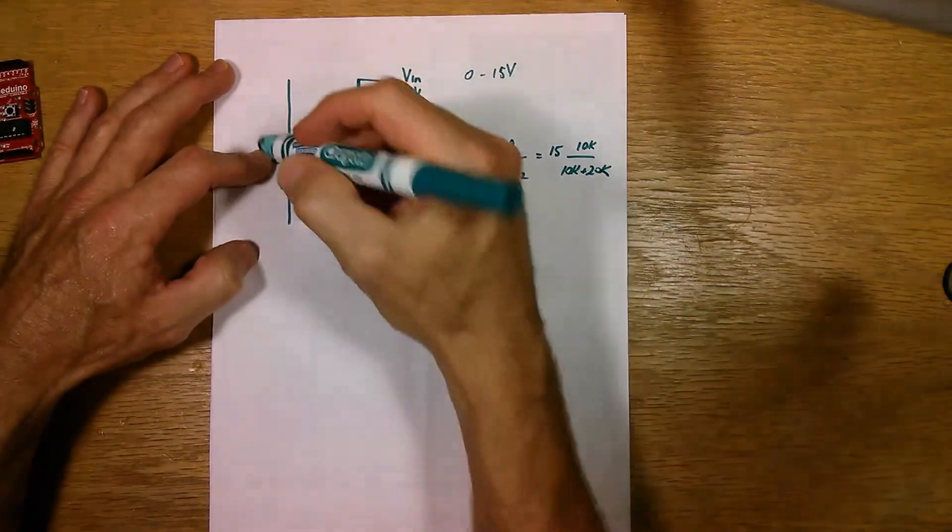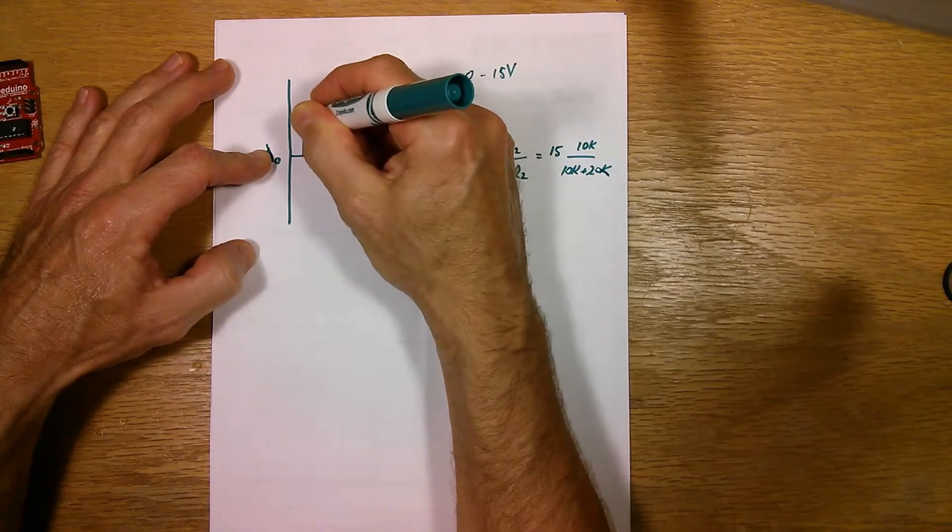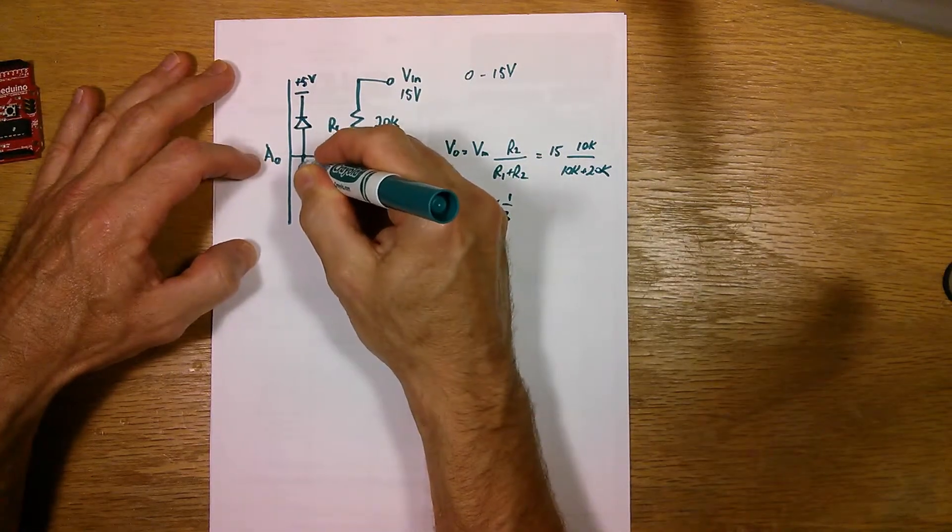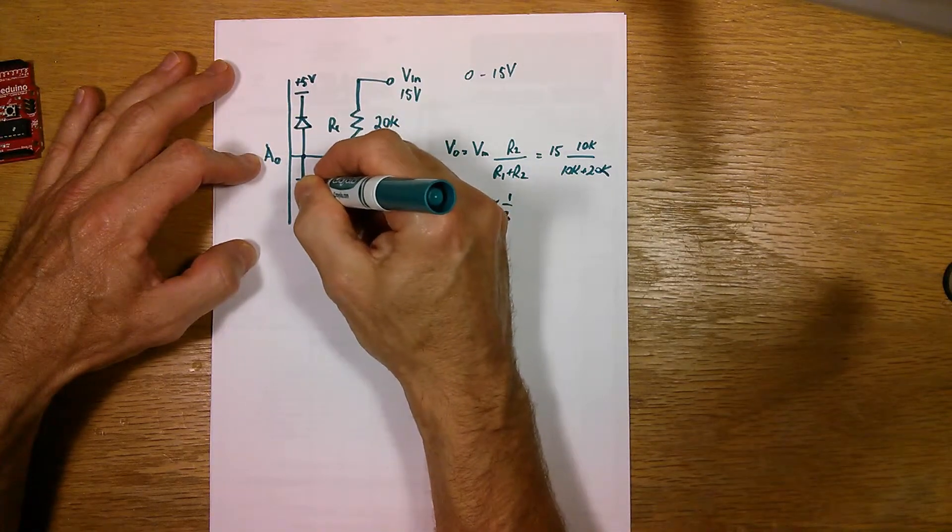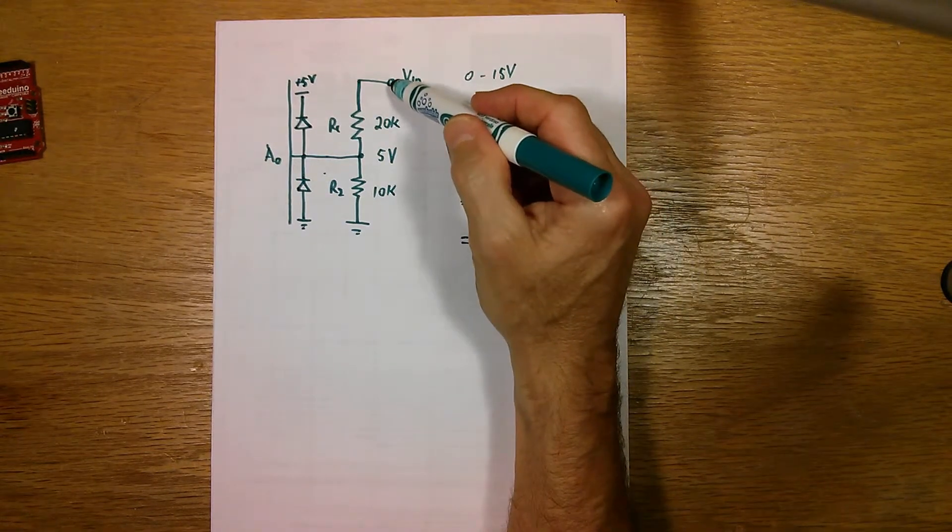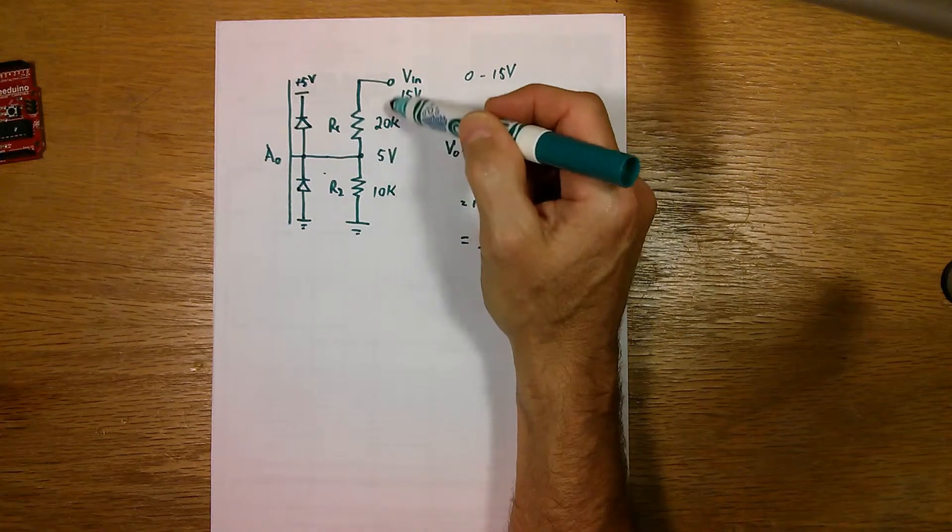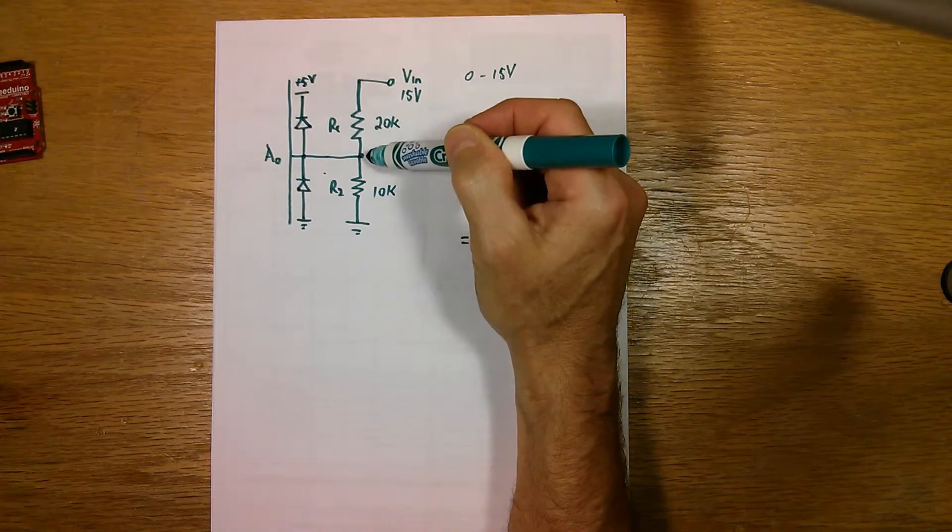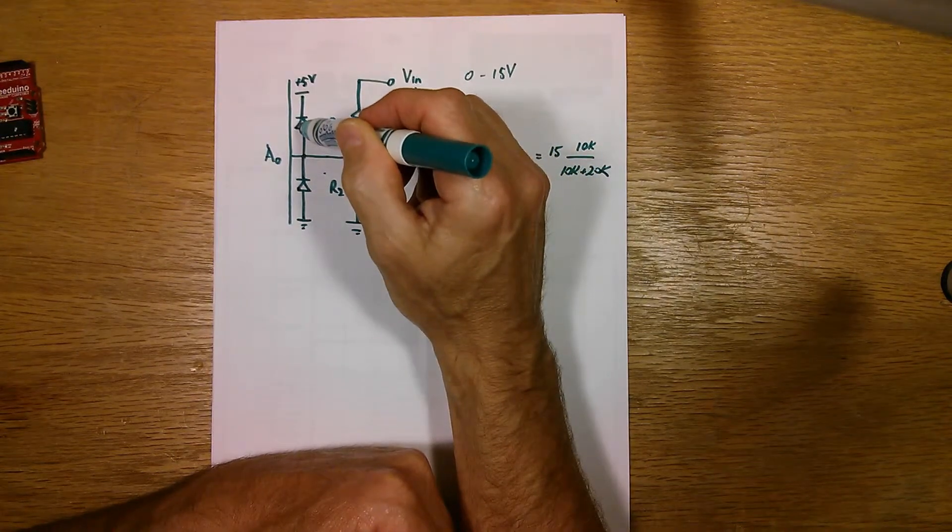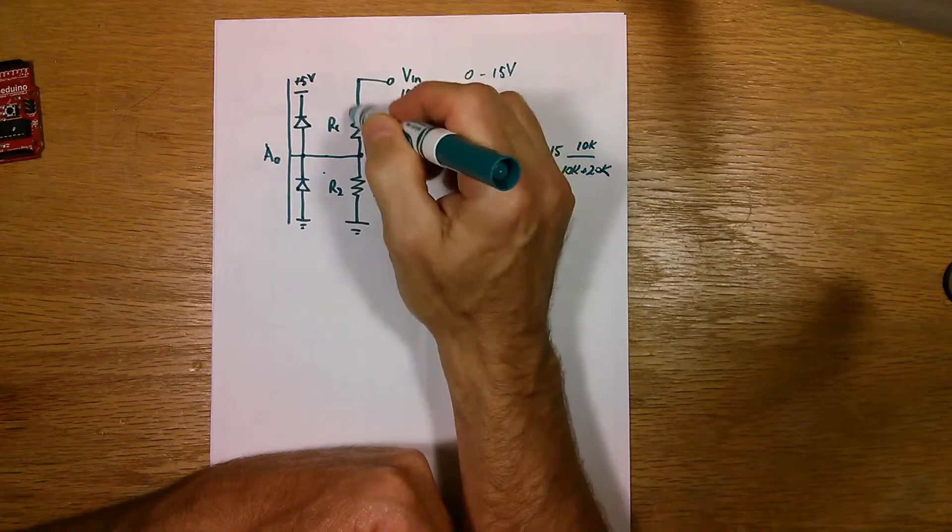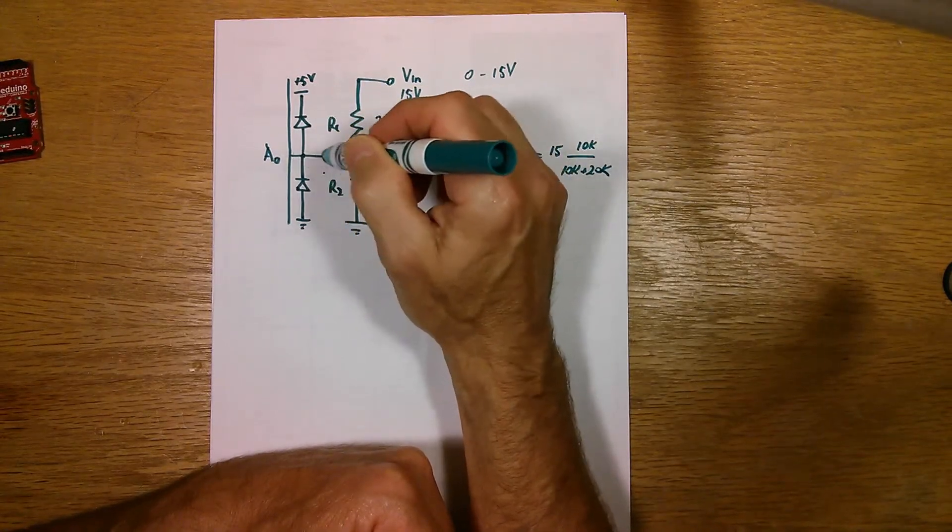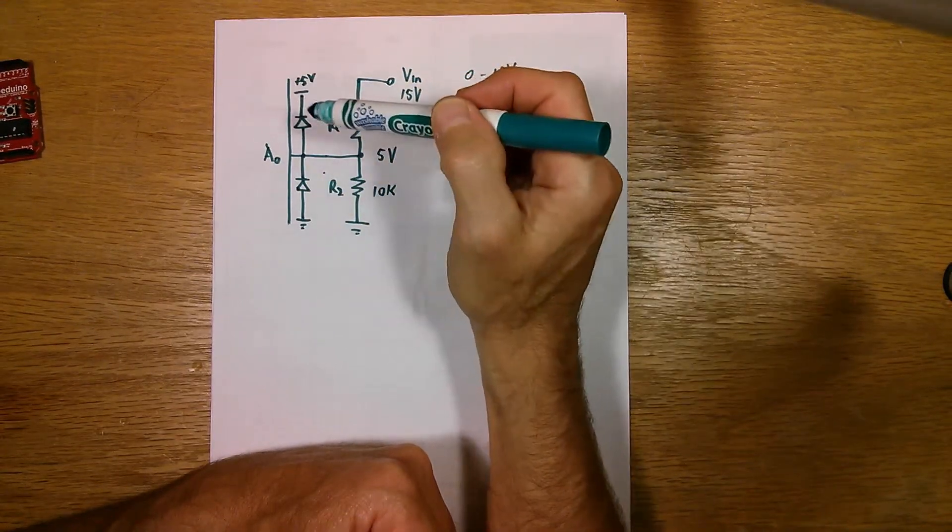So a very simple way of protecting that analog input pin is to put a couple of diodes in. One diode would go here between the pin and the 5 volts supply, and the other diode would go between the pin and ground. So what would happen here if we started to bring this pin above 15 volts? So we know that because of the ratio of the resistors here, this voltage here is going to start to rise above 5 volts. And what's going to happen is if it goes up high enough above 5 volts, it'll forward bias this diode here and it'll start to conduct and draw current through the resistor here and prevent this pin from going any higher than one diode drop here of about 0.7 volts above 5 volts. And that way it protects the analog input pin from any damage.